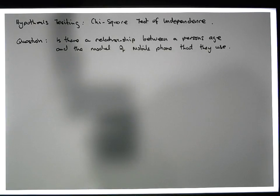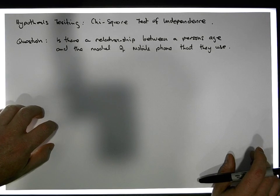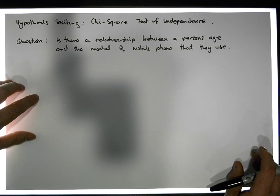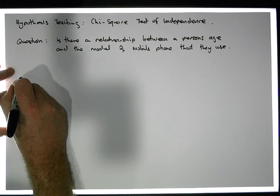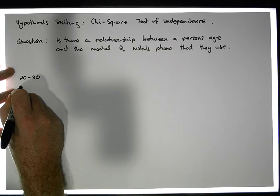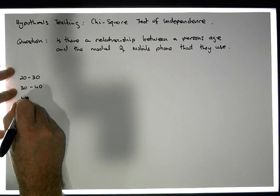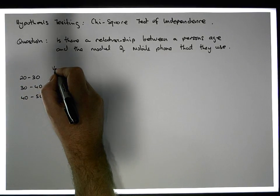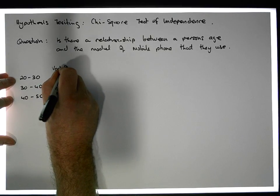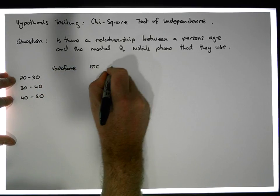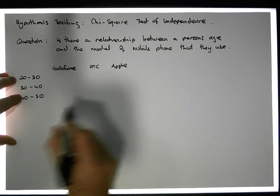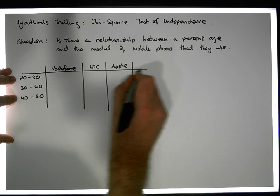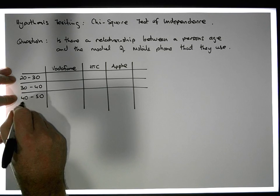Let's assume that I've randomly selected 365 people from some population and asked them two questions: what's their age, and what brand of mobile phone do they use? The age categories were 20 to 30 years of age, 30 to 40 years of age, and 40 to 50 years of age. The brands of mobile phone were Vodafone, HTC, and Apple. From this particular sample we got the following observations, which I'm going to place into a contingency table.